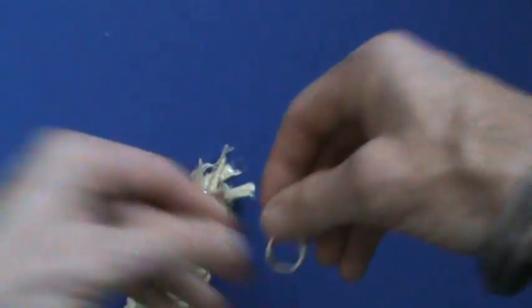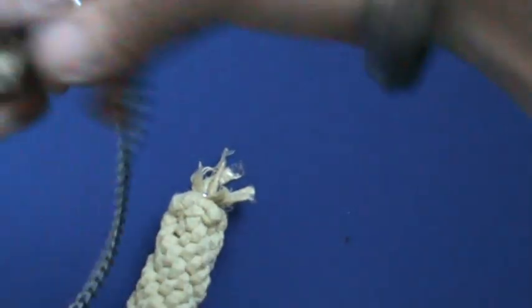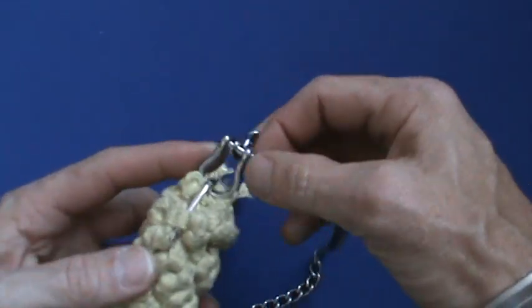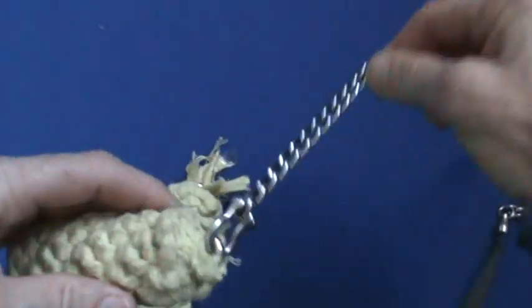And then we attach the chain. This is the other one, as you can see, put the chain on, tighten this up with pliers, moves quite freely.